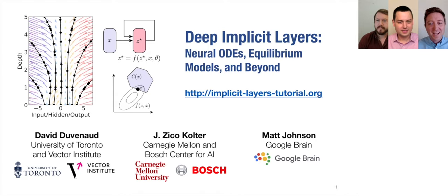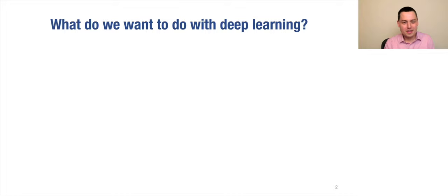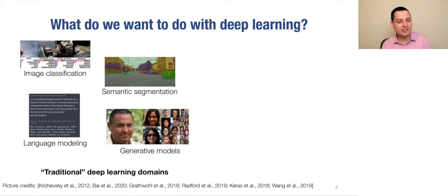We're going to talk today about deep implicit layers, neural ODEs, equilibrium models, and beyond. To start off, we're going to ask the question: what do we want to do with deep learning? If you're using deep learning, you're probably thinking about some of the classical applications — things like image classification, semantic segmentation, language modeling, and generative models. These are domains that have seen major breakthroughs due to deep learning.